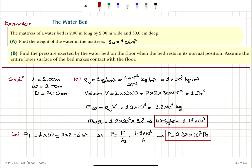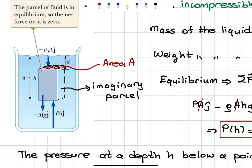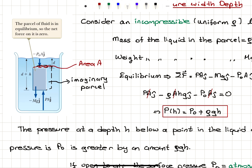Pressure can vary with distance over a surface — specifically, it varies with depth inside a fluid. If we consider an incompressible liquid — meaning it has a uniform density — we can concentrate on a parcel of fluid that is in equilibrium. Think of an imaginary box with no object inside, just fluid. We have on top a pressure P₀, and our y-axis is pointing upward.